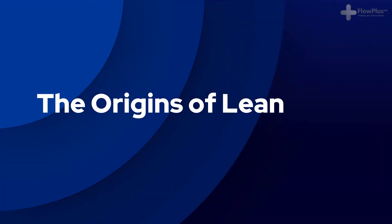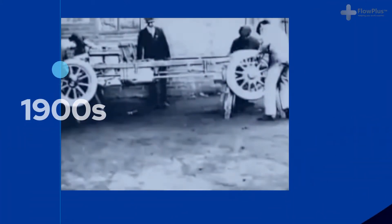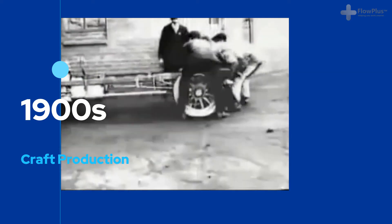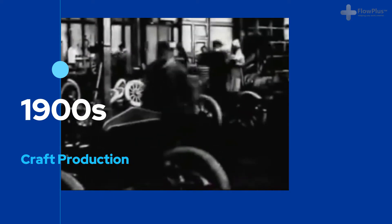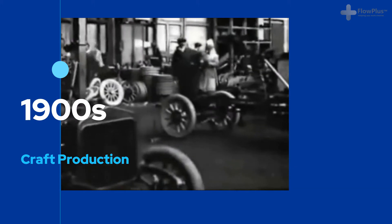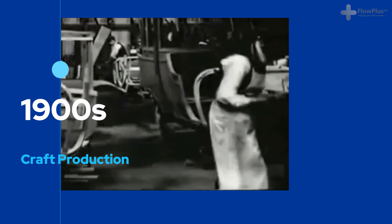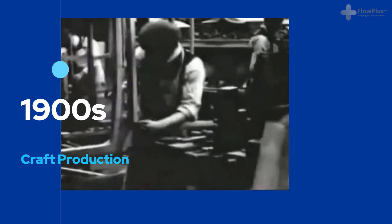The story of lean begins in the automotive industry. The invention of the motor car brought a new wave of consumerism. Within most people's lives, their second most valuable asset is their car, just after their house. In 1900, cars were made very differently to how they are today. They were built by craftsmen in their workshop, working as individuals or as small teams. The mechanics were highly skilled and made automobiles on a one-by-one bespoke basis. Because the cars took so many hours and didn't benefit from any economies of scale, they were extremely expensive and only available to the rich.